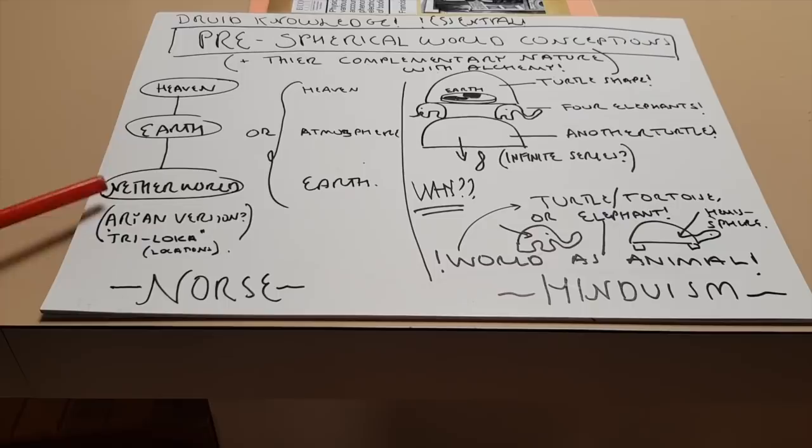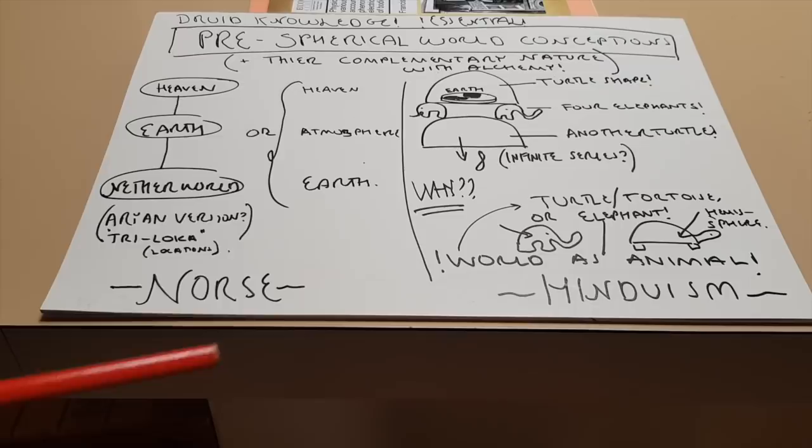There is a Vedic tradition which is very similar to the Norse tradition, which is basically this. And that is called the Trilokka or I imagine Trilokka three location tradition. And that is basically we'll call that Norse tradition.